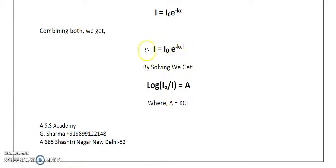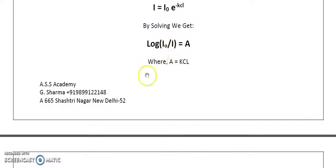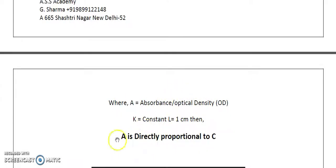Rearranging the Beer-Lambert equation: I/I₀ = e^(−KCl), and I₀/I = e^(KCl). Taking log on both sides: log(I₀/I) = KCL. The term log(I₀/I) is referred to as absorbance (A) or optical density (OD). Therefore, A = log(I₀/I) = KCl. This formula is very important, specifically for numericals asked in UGC exams. Absorbance is directly proportional to concentration, which is the statement of Beer's law.